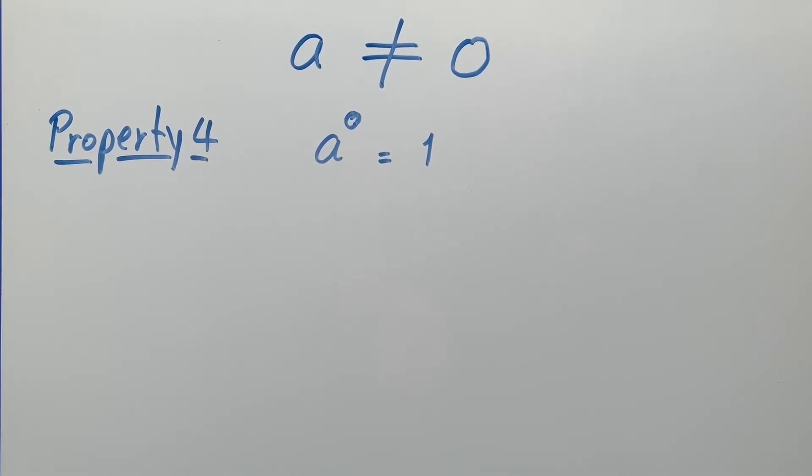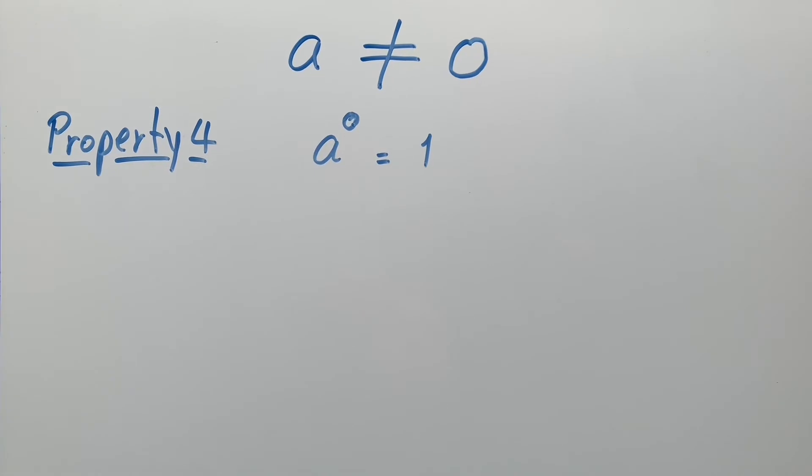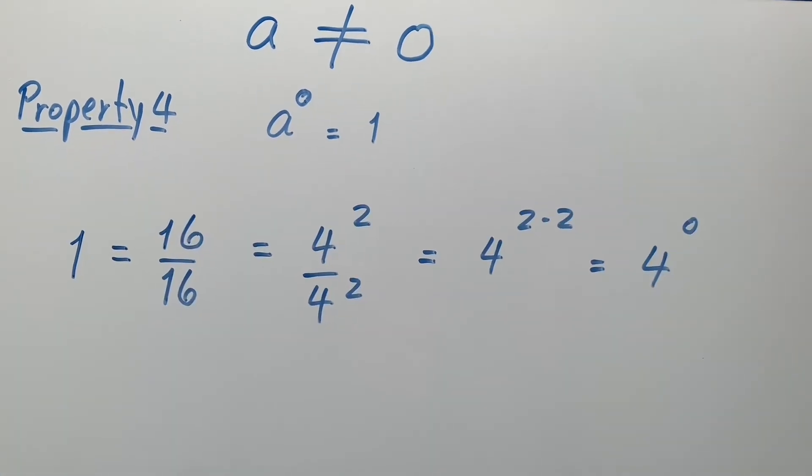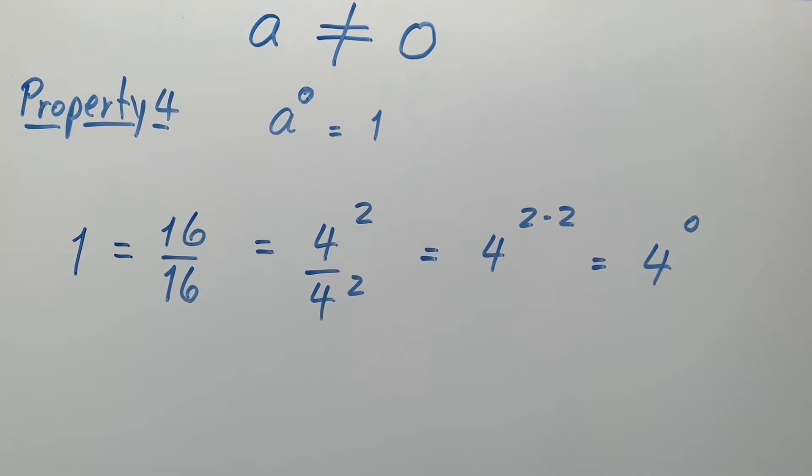Property 4: any non-zero number raised to the 0 power is 1. From this example, we can see that 4 to the 0 power must be 1.